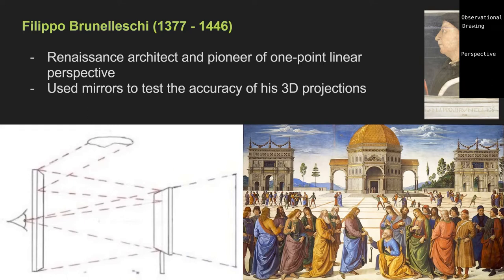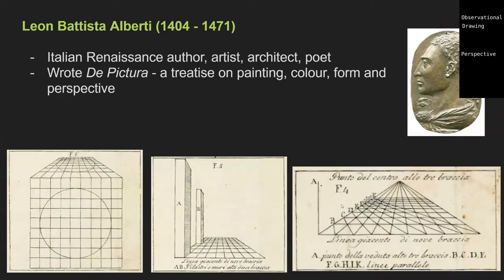Major contributors to the theory of perspective include Filippo Brunelleschi and Leon Battista Alberti. These diagrams are actually the theories we're going to use today — this is about as complex as we'll get. Alberti's diagram in 'De Pictura' shows how in one-point perspective, we use evenly divided points on the nearest line and diagonals to find how square tiles on the floor should get smaller as they move away.